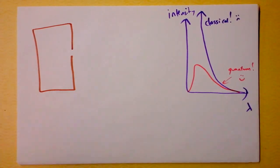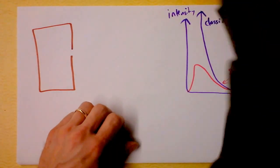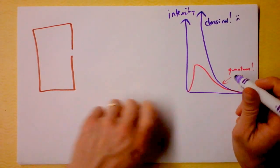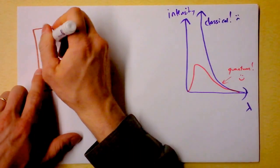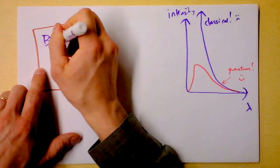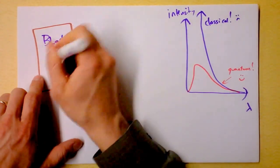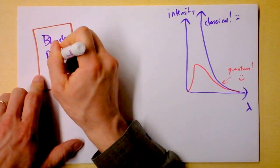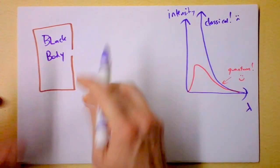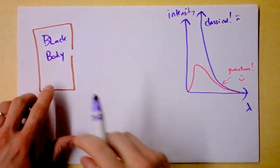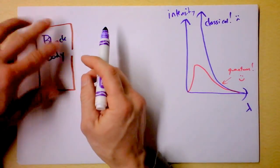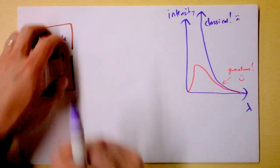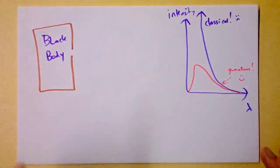Planck has solved the ultraviolet catastrophe, where the expected intensity of light coming out of a black body is shown here. This is a black body cavity. Some people call it a perfect radiator because the only light that comes out of it is light actually from the temperature of the stuff inside of it.